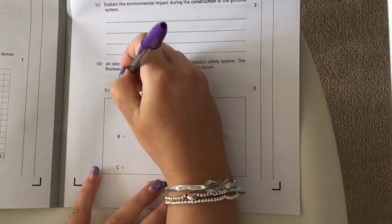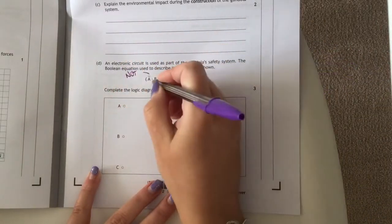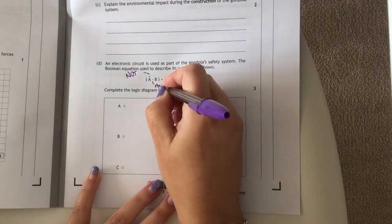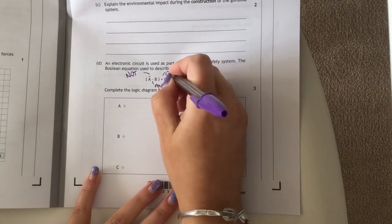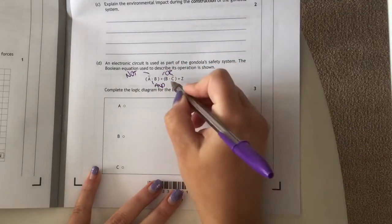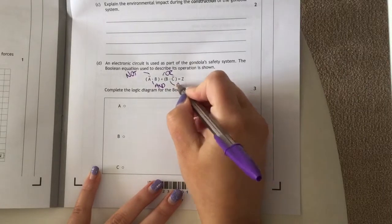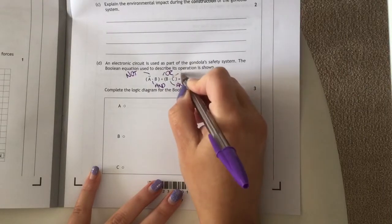Our little line above means NOT, our dot is AND, and our plus is OR. The same goes for here, so I've got an AND and another NOT.